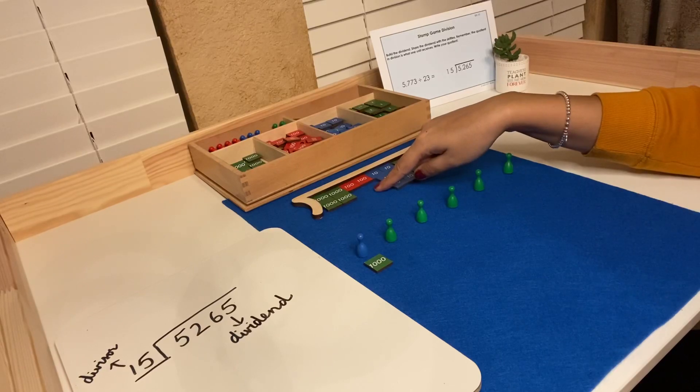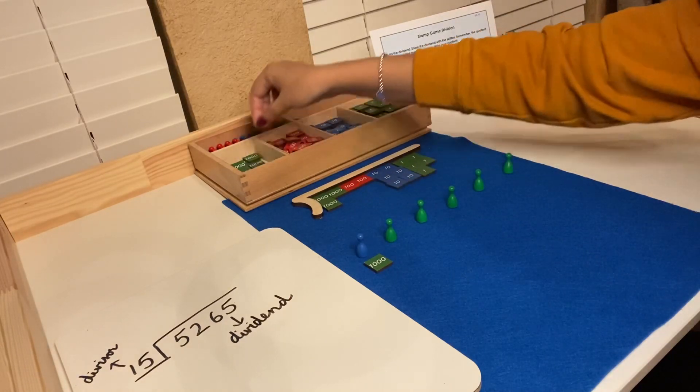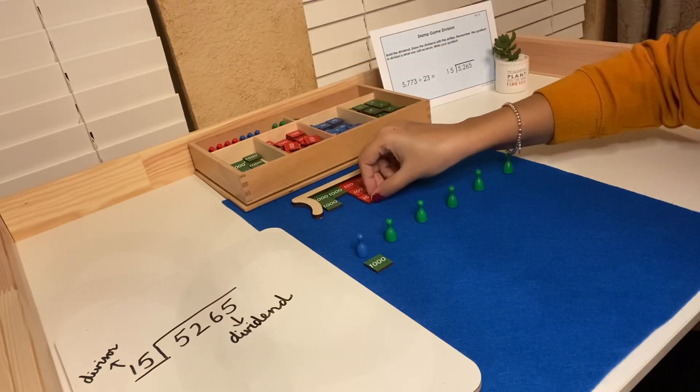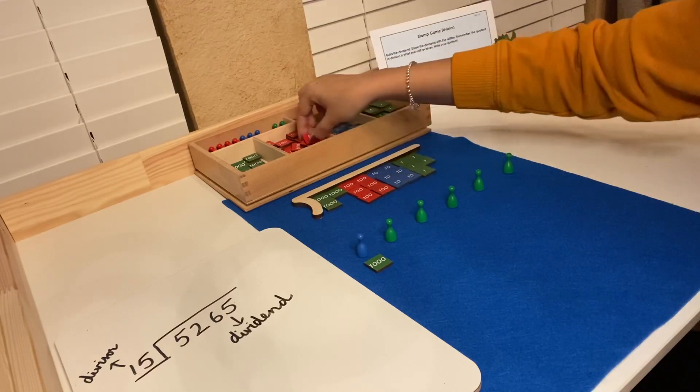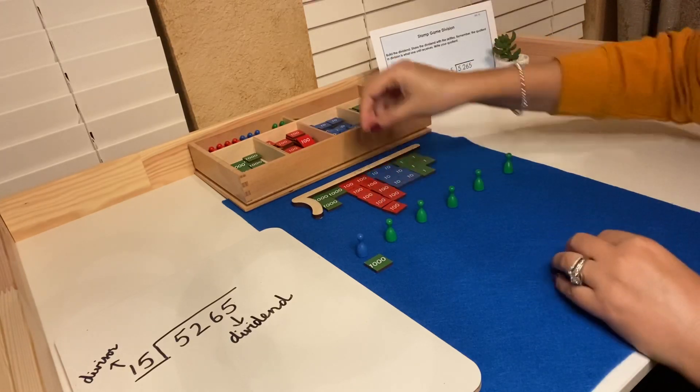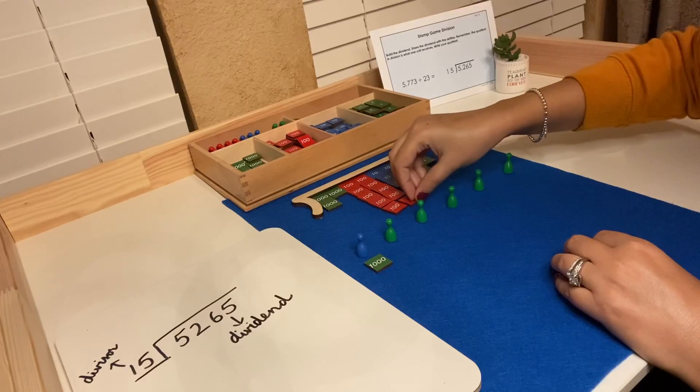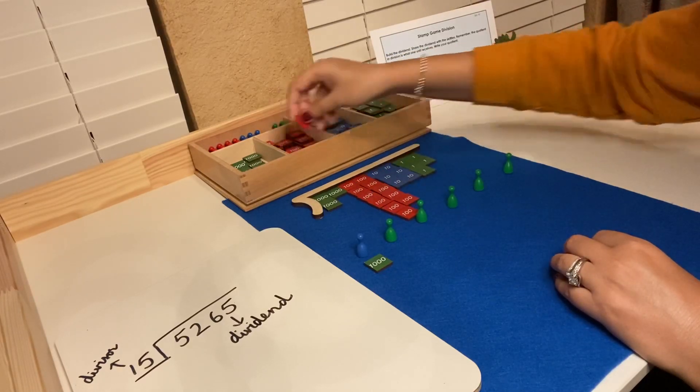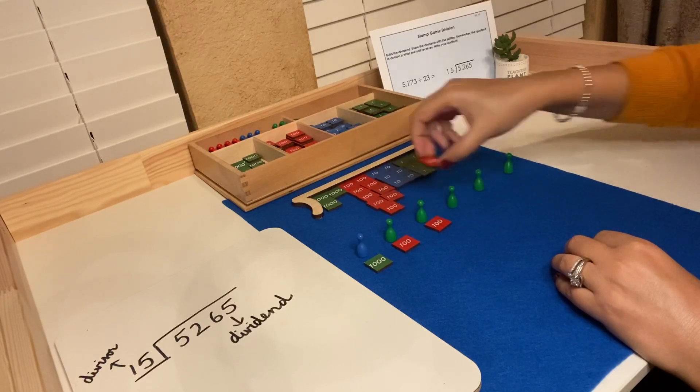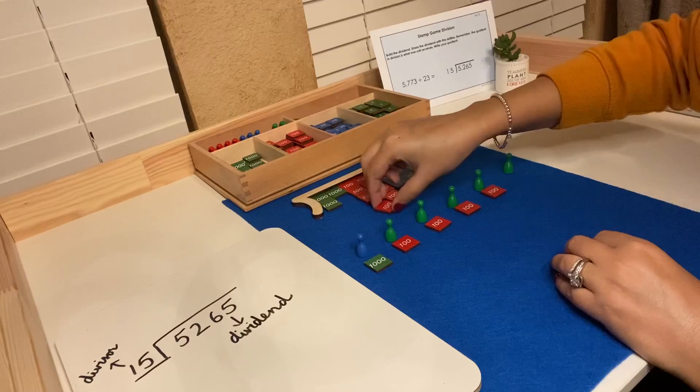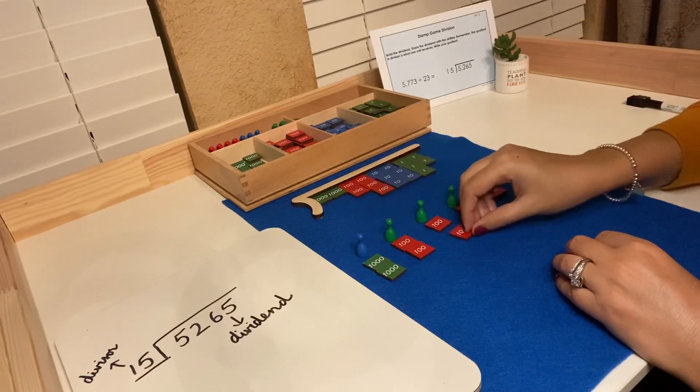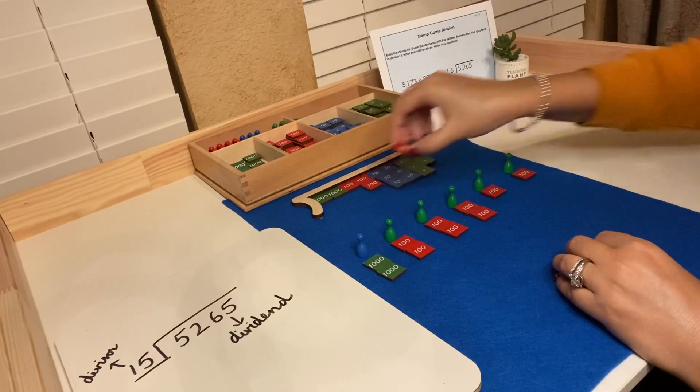I don't have enough hundreds, so I will exchange this thousand for ten hundreds. One, two, three, four, five, six, seven, eight, nine, ten. Everyone receives their fair share. We continue to give everyone their fair share.